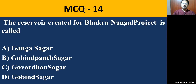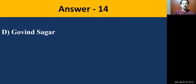MCQ question number fourteen: The reservoir created for the Bhakra Nangal project is called — Ganga Sagar, Gobindapanth Sagar, Govardhana Sagar, or Gobind Sagar. The correct answer is Gobind Sagar. You need to know the project names for different rivers and the names given to their reservoirs.